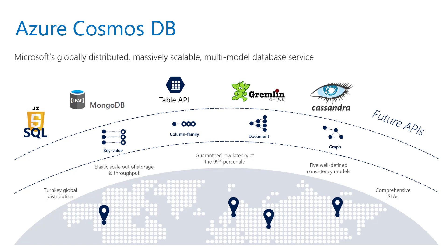Cosmos DB is Azure's globally distributed multi-model database service with automatic and elastic horizontal scaling of throughput, or number of requests per second, and storage. Before we dive deep into explaining the functionality of our new tool, let's go over how partitioning works in Cosmos DB.